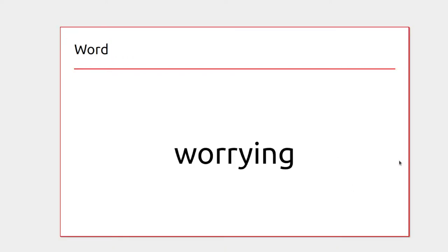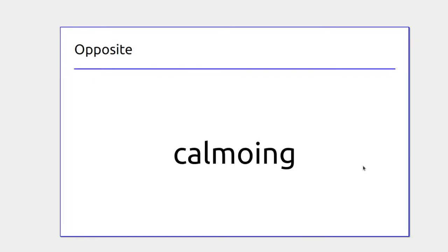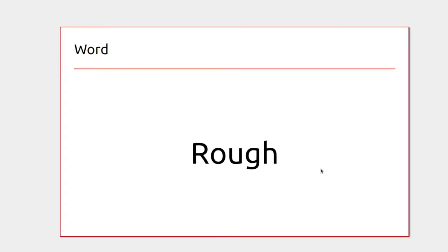If children said they'd be home at 3:30 after school and haven't turned up, I might be worrying. The opposite of worrying would be calm — I misspelled that one, but yes, the opposite of worrying is calm.